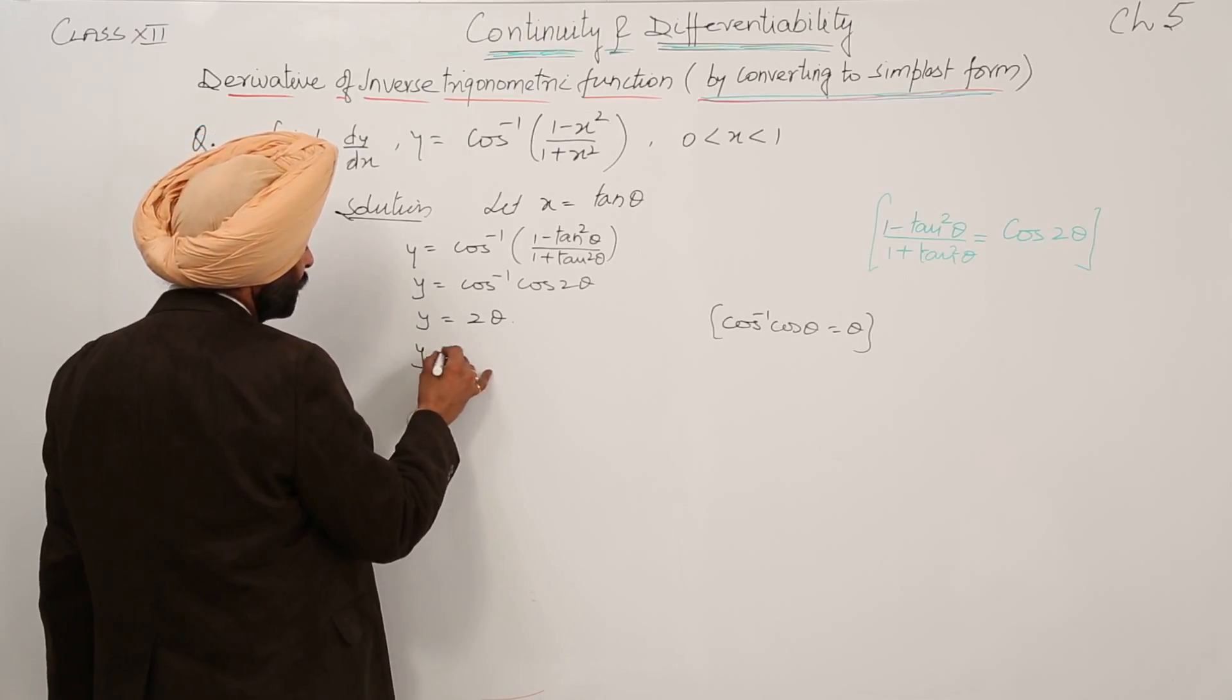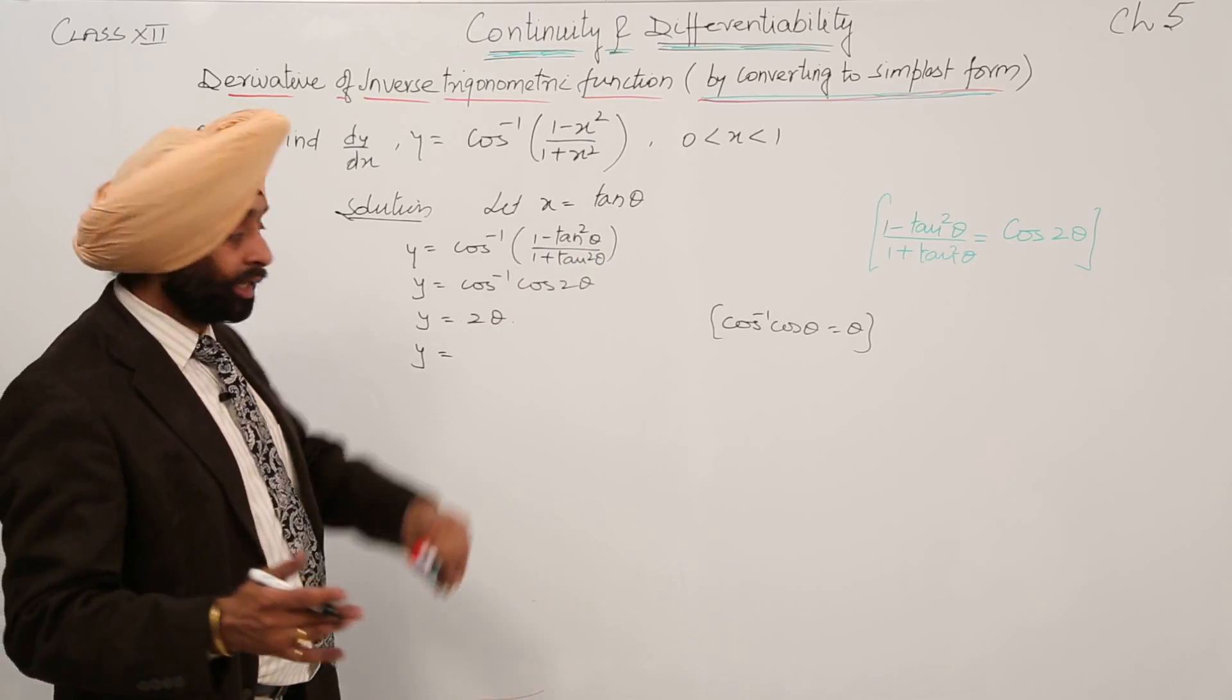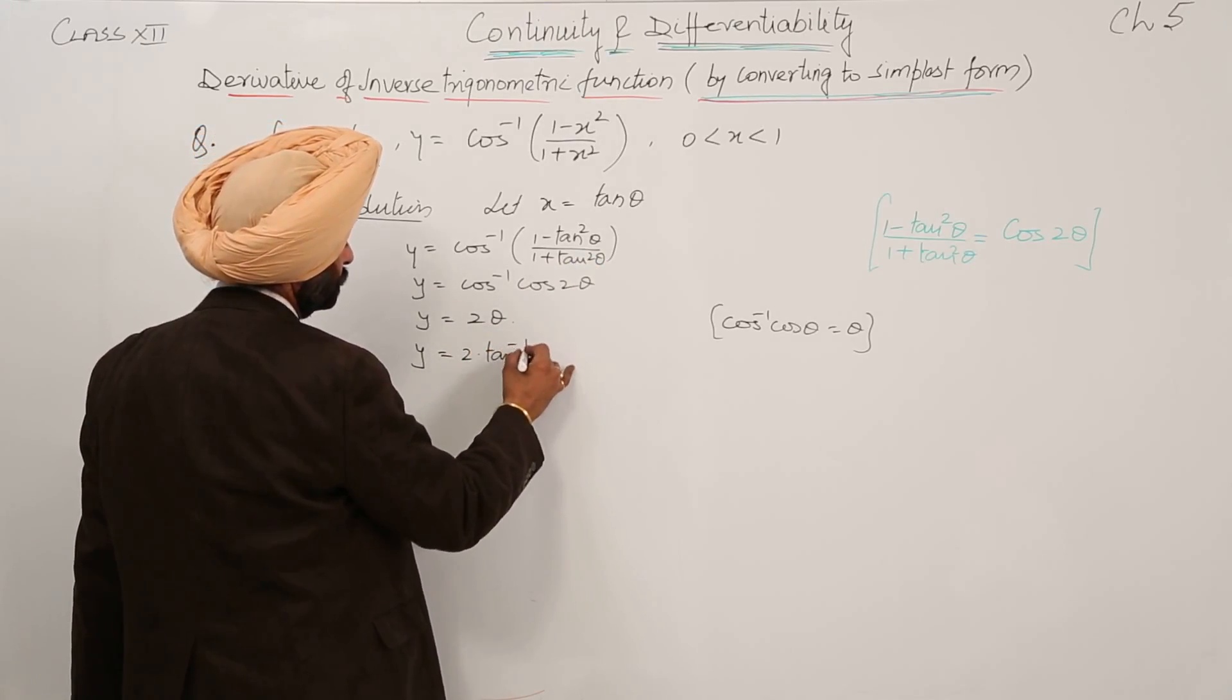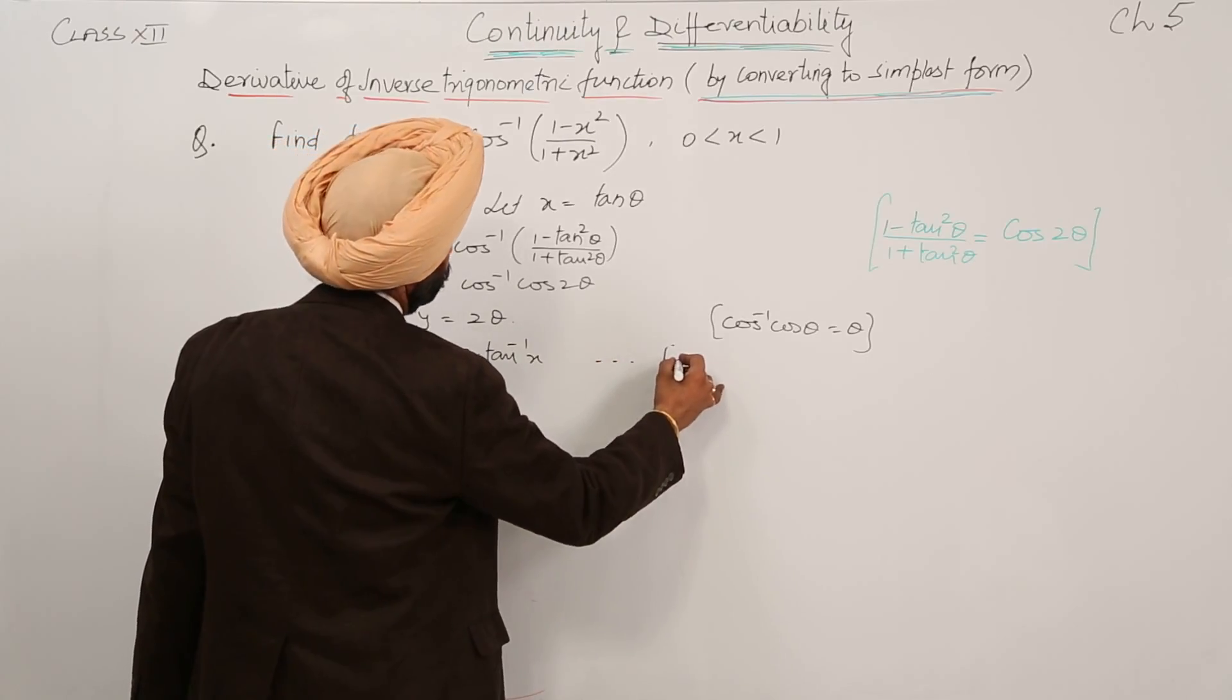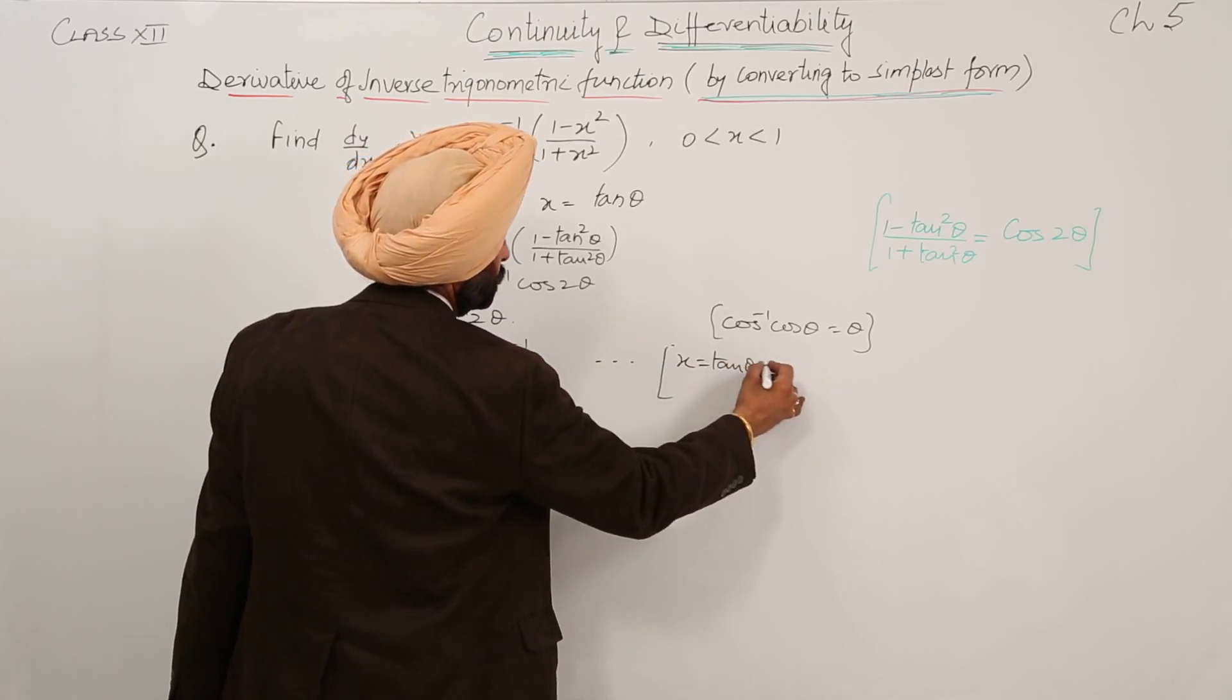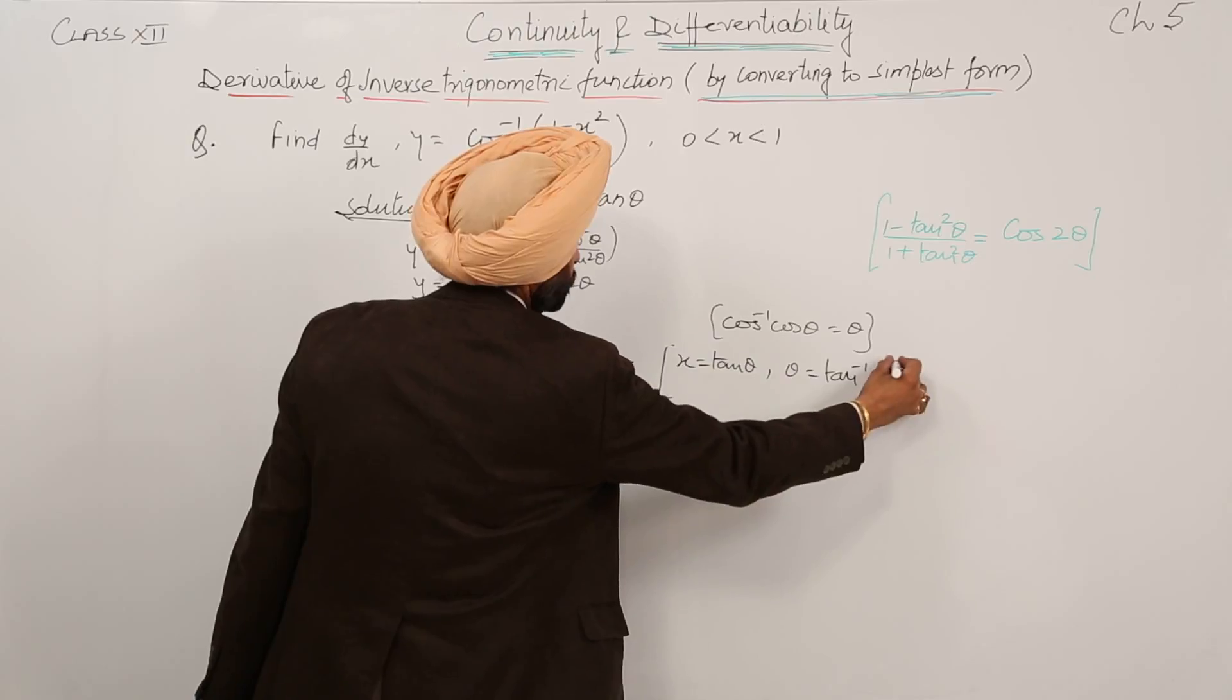Now, this y is equal to, when we have taken x equal to tan theta, then what theta is? y is equal to 2 tan inverse x. And we can write it here, x is equal to tan theta, we have supposed, therefore theta is equal to tan inverse x.